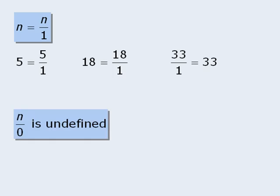Another important property is that any number n over 0 is undefined. In other words, we cannot assign a value to this fraction. Here is why. If we think of fractions as representing division, then dividing by 0 is the same as asking how many times 0 will divide into the numerator, and as you can see this is impossible to compute.